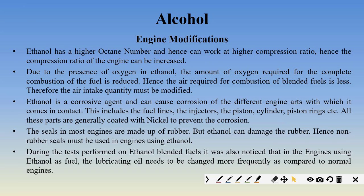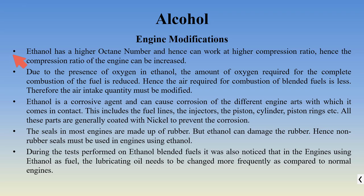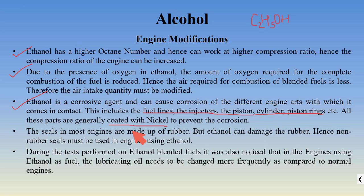The changes that must be made to use ethanol as a fuel: first, the compression ratio of the engine must be increased. Ethanol has a higher octane number, so the chances of self-ignition and knocking are reduced, allowing the compression ratio to be increased for greater efficiency. Ethanol itself contains oxygen (C2H5OH), so the amount of oxygen from air required for combustion is less; hence the air intake quantity must be modified. Ethanol is extremely corrosive, so the fuel lines, injector, piston, cylinder, and piston rings must all be coated with nickel to prevent corrosion.